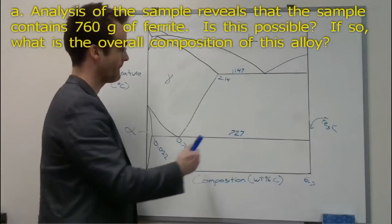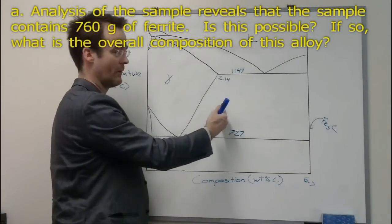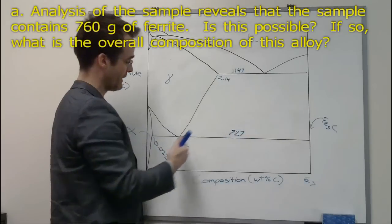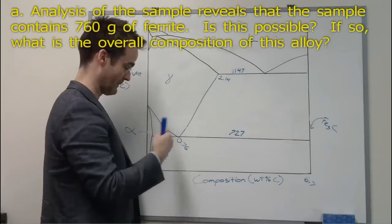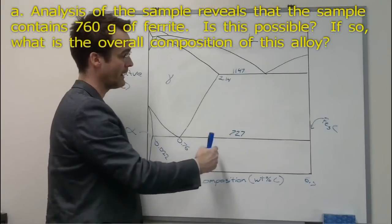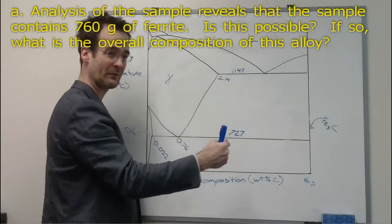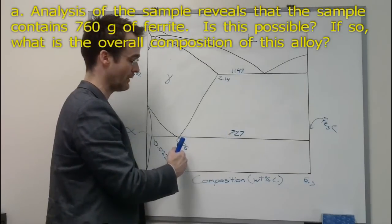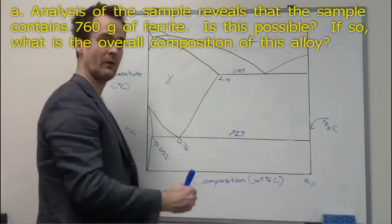The other word there, it says it's steel. It has to be less than 2.14. Above that, we know that's cast iron. So we actually have a composition for steel between 0.022 and 2.14. The question also tells us it's hypereutectoid, so we say in fact it's between 0.76 and 2.14.